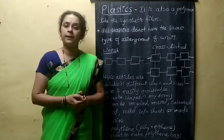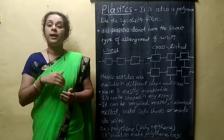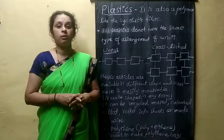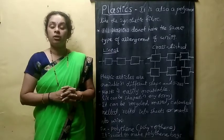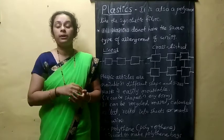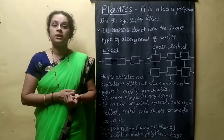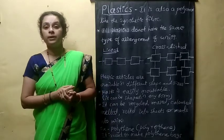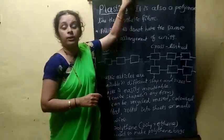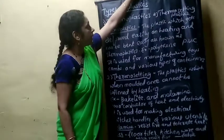Depending on the characteristics or nature of the plastic, they are classified into different types. Mainly they are classified into two types based on their nature — whether they melt on heating or set on heating. Based on that, there are two types of plastic: thermoplastic and thermosetting plastic.